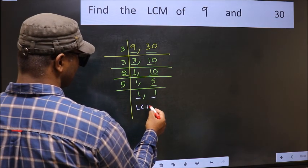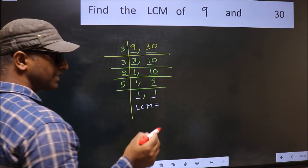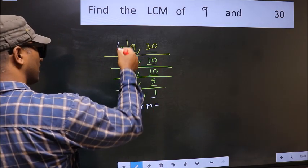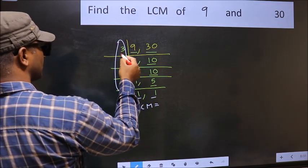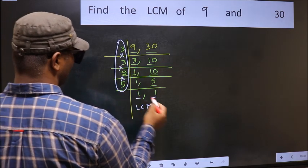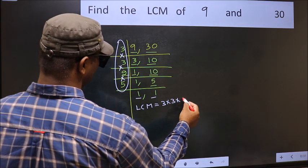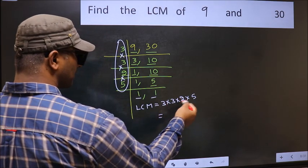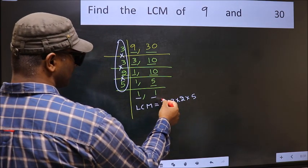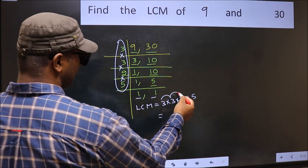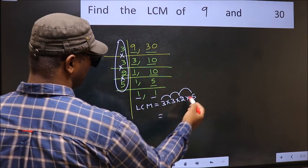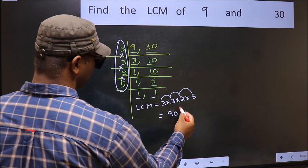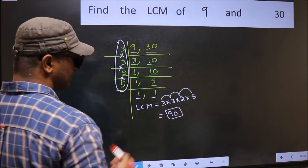So our LCM is the product of these numbers. That is 3 into 3 into 2 into 5. Let us multiply these numbers: 3 into 3 is 9, 9 into 2 is 18, 18 into 5 is 90. So 90 is our LCM.